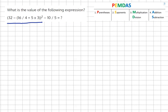What is the value of the following expression? 32 minus 16 over 4 plus 5 times 3 squared minus 10 over 5.